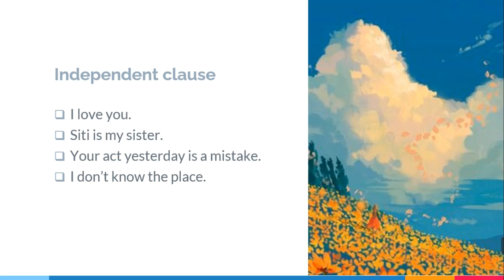'I love you' — this is complete. This sentence consists of 'I' (subject), 'love' (verb), and 'you.' The second sentence, 'City is my sister,' is also a complete thought: 'city' is subject, 'is' is verb, and 'my sister' is the complement. The next sentence, 'Your egg yesterday is a mistake' — 'your egg' is the subject, and 'yesterday' is an adverb placed after the subject.